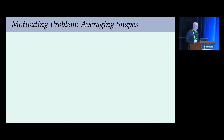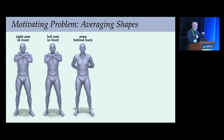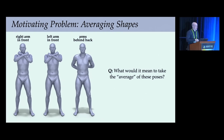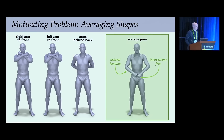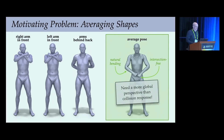Consider three poses of the human body: right arm in front, left arm in front, and arms behind the back. What would it mean to take an average of these poses? You probably don't picture something with unnatural bending and self-intersections, but that's what we get from a simple average of vertex coordinates. What we want instead is a physically-realizable middle pose, maybe with the arms down near the waist—not something you can get by slamming arms into the chest and simulating a collision response. We need a more global perspective.